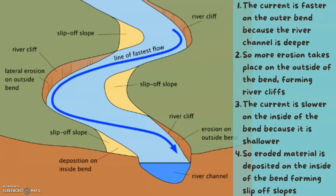Step 1: The current is faster on the outer bends of the meander because the river channel is deeper. Step 2: This is why more erosion takes place on the outsides of the bends, forming river cliffs. The current is slower on the inside of the bend because it is shallower.